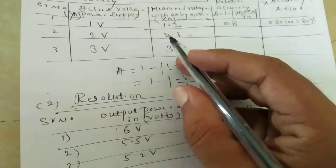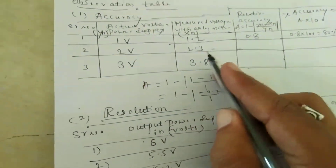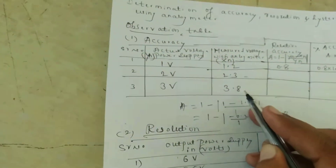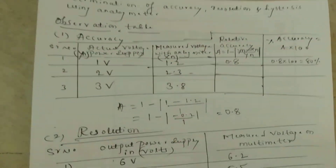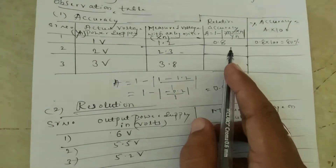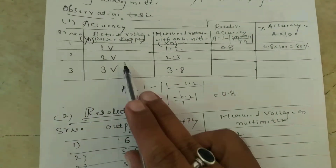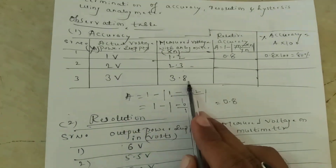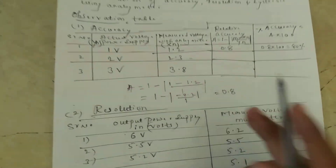Like this, you have to calculate for 2 volts and 2.3, and 3 volts and 3.8 — getting some values. Whatever remaining table is there, that is the relative accuracy for 2 volt / 2.3 and 3 volt / 3.8. Calculate and write it here. Thank you.